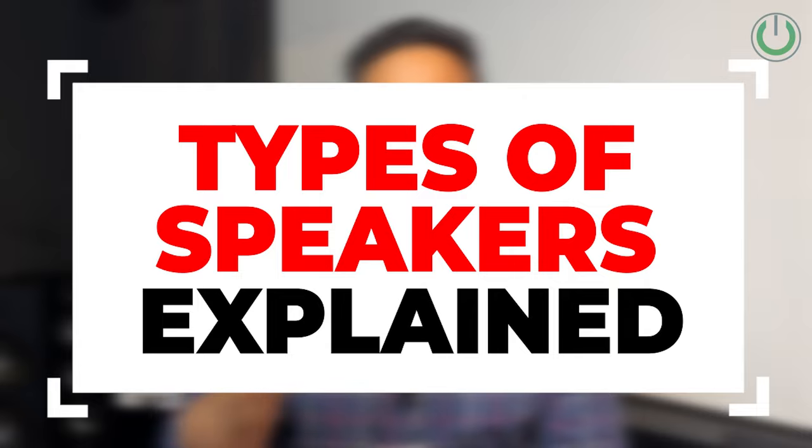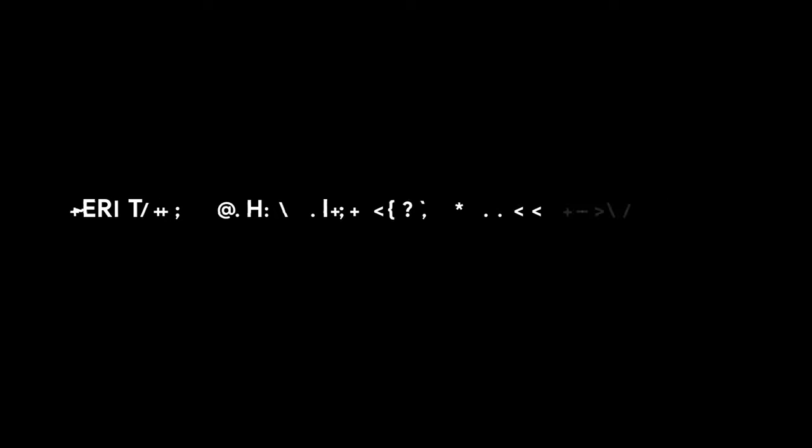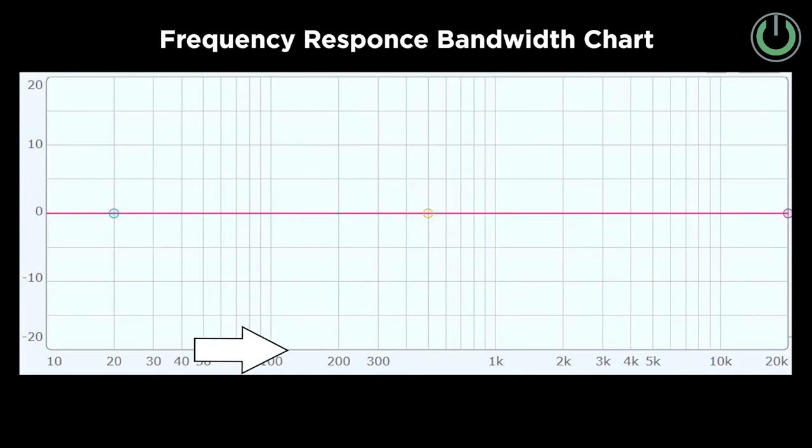Before we begin, in one of our previous videos we mentioned five critical specifications to check when selecting a speaker. One of them was frequency response — the frequency bandwidth that a speaker can deliver, starting from around 40–50 Hz on the lower side and going all the way up to 20–35 kHz.